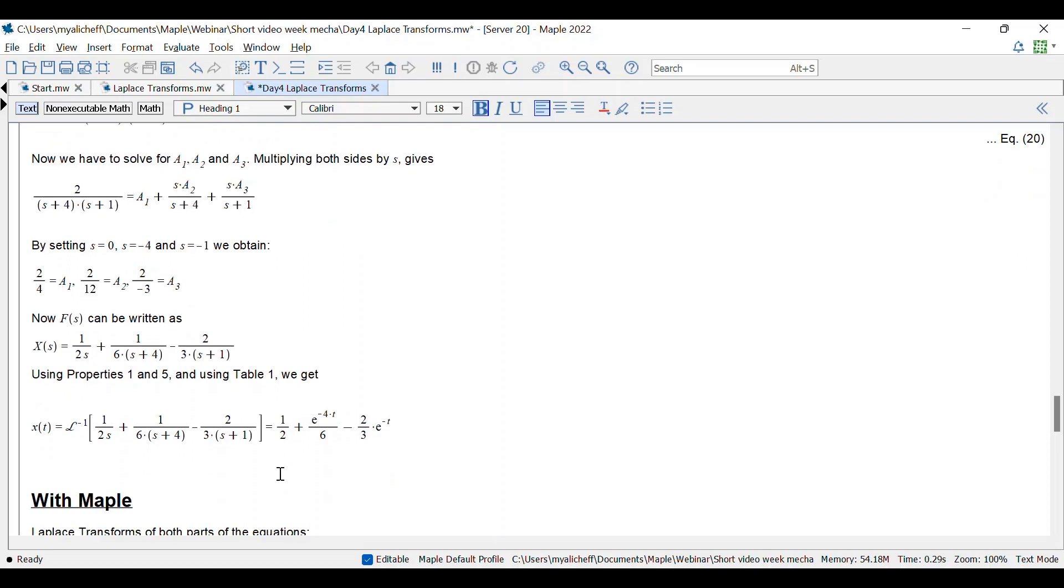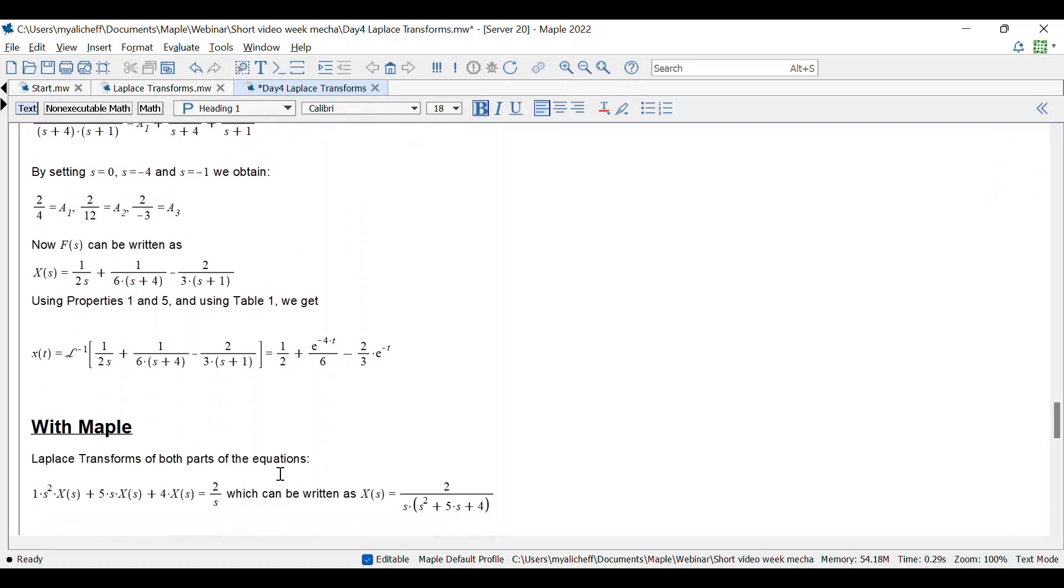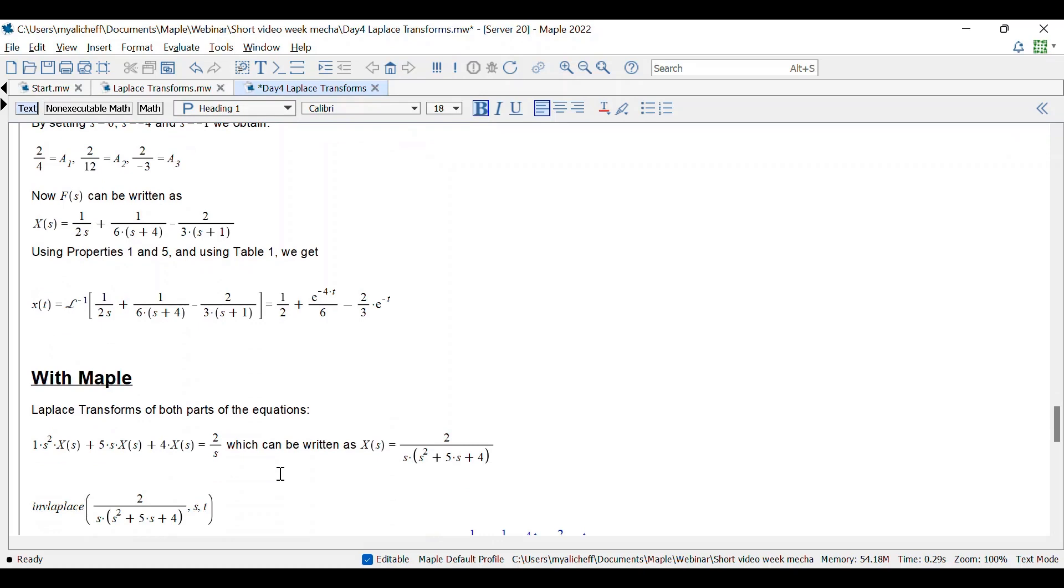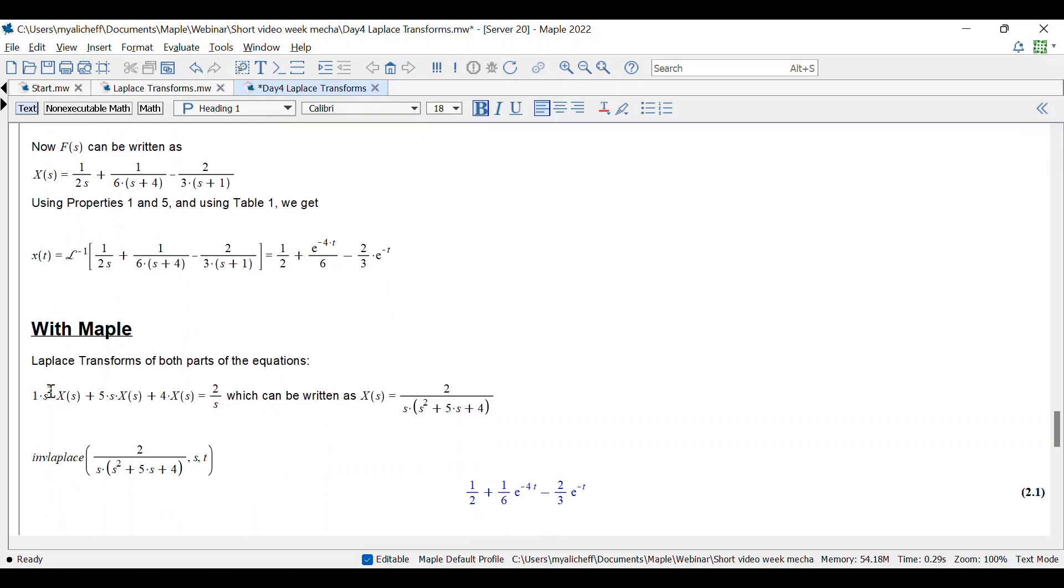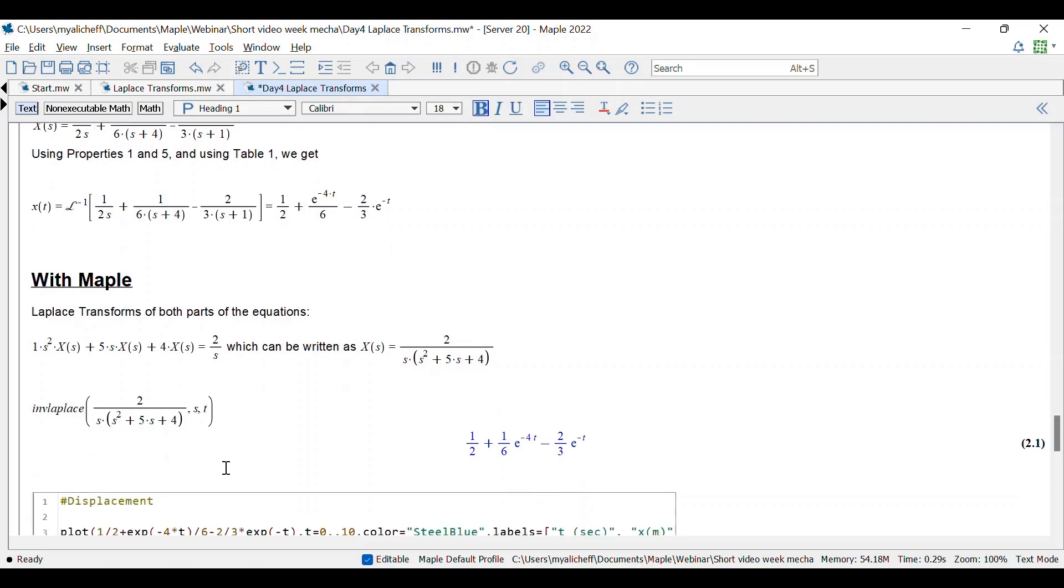Now within Maple with the commands from Maple, you will have to use the inttrans package. What you will need to do, the first step is to define your Laplace transform for both parts of the equation here. You will write it to make it in the form that Maple will recognize X of S. And then we just use the inverse Laplace command. S and T are variables here. And we get the exact same equation.